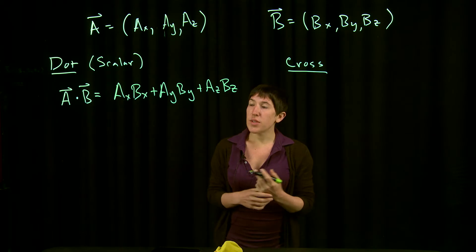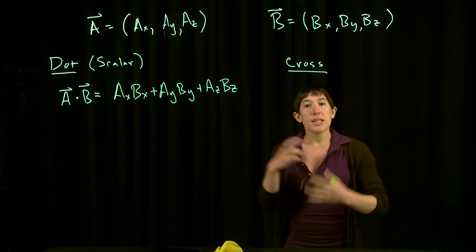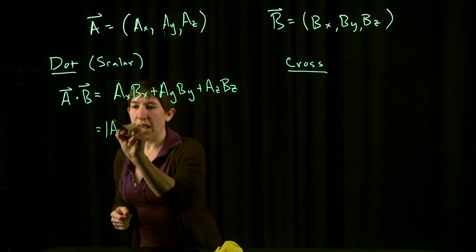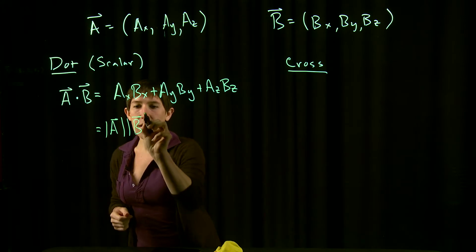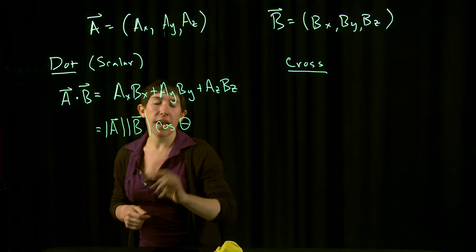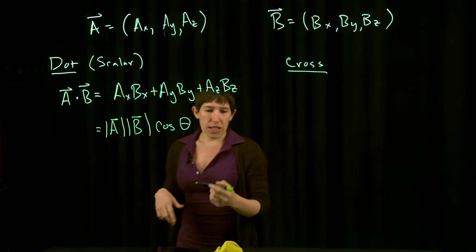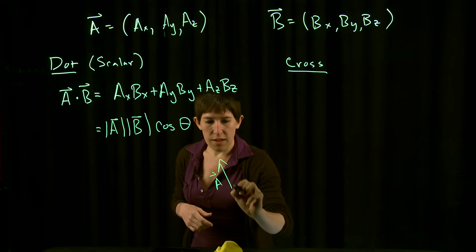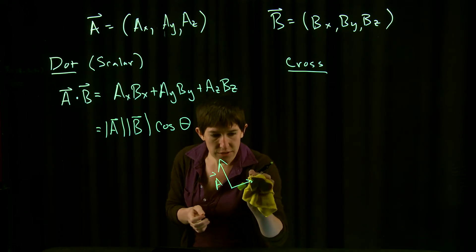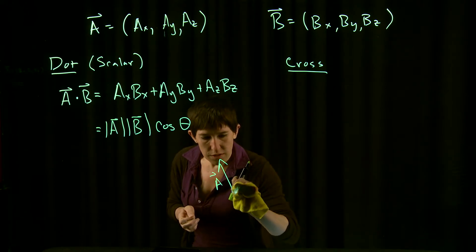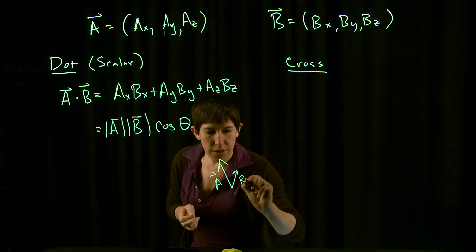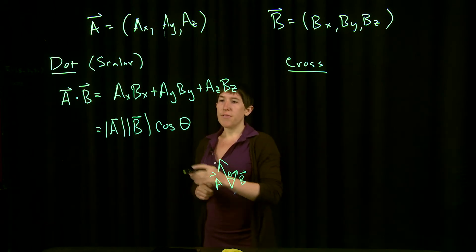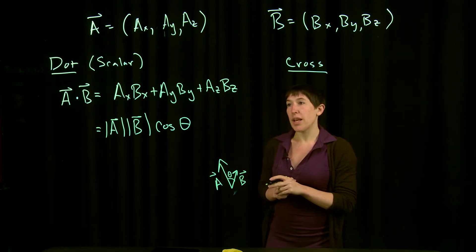If instead of being given the components, you're given the angle between the two vectors and their magnitude, then this can also be calculated as |A| times |B| times cos(θ), where θ is the angle between the two. So if our vectors were like this with some angle θ between them, and you were given this information, then this would be the easiest way to compute the dot product.